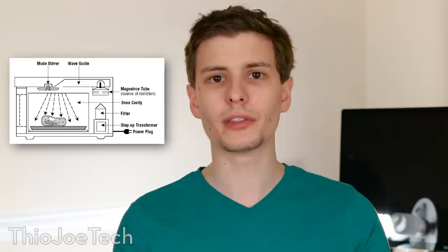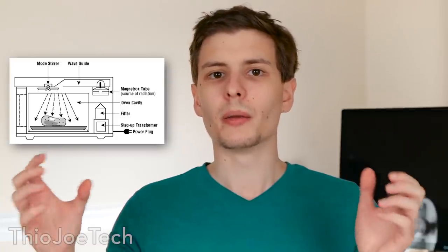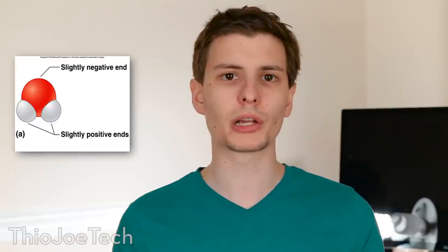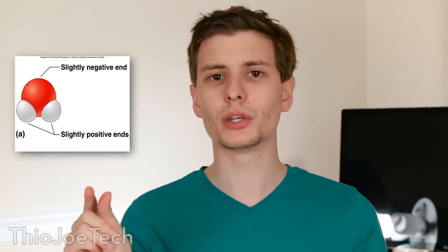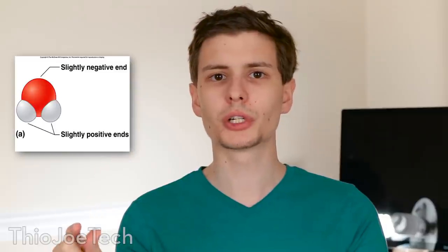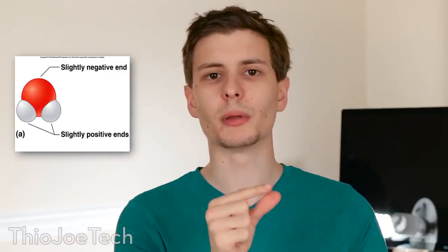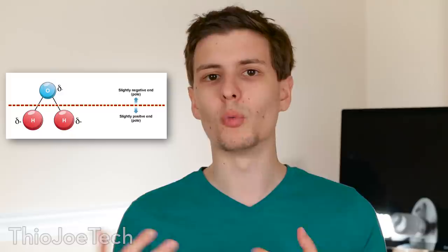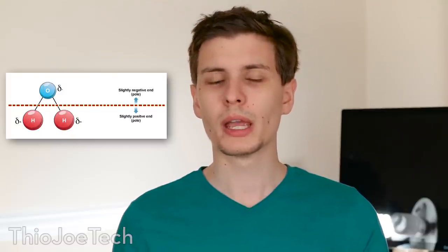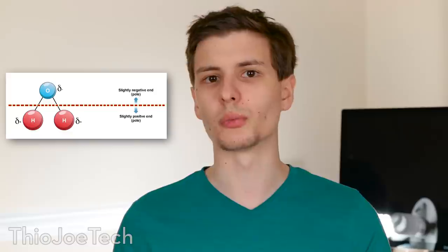But how exactly do these microwaves heat up food? A microwave generates an electromagnetic field at these frequencies, and different molecules are going to try to line themselves up with that field. These specific types of molecules are called polar molecules, meaning one side of the molecule is more positively charged and the other side is more negatively charged. Water is one of these polar molecules, and so are many fats.